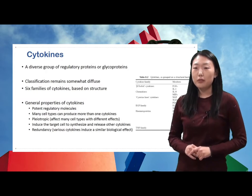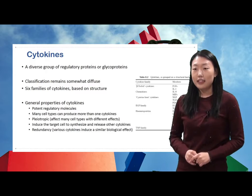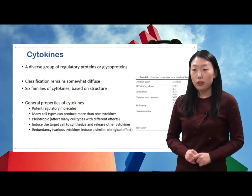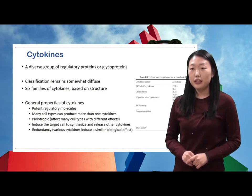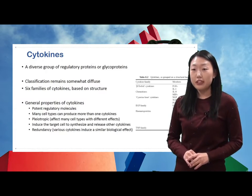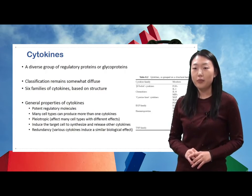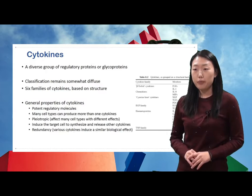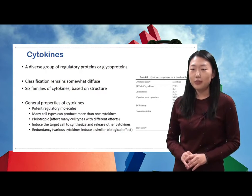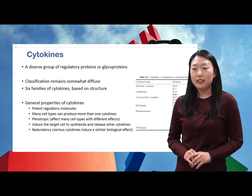Most cytokines have similar functions. These are the general properties of cytokines. Cytokines are very potent regulatory molecules — nanomolar to picomolar concentrations can be effective. Cytokines are produced by various cell types, and each cell type can produce more than one cytokine. They are also pleiotropic, which means they can affect a variety of cell types. The effect can be the same or different depending on the cell types.